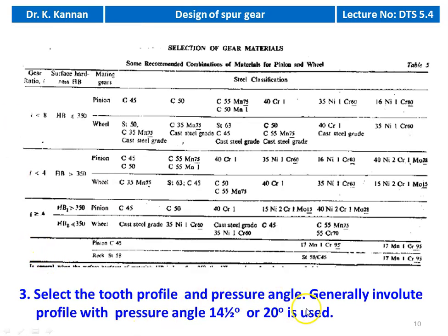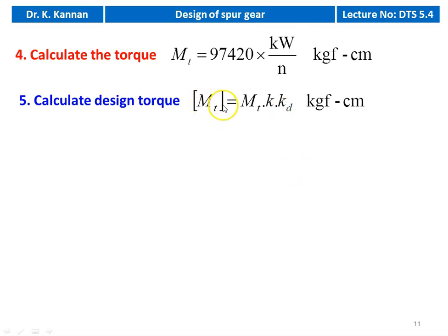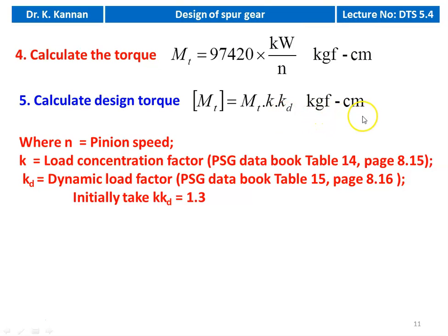Select the tooth profile and pressure angle. Generally, involute profile with pressure angle 14.5 degrees or 20 degrees is used; we always use involute profile. Then calculate the torque: MT = 97420 × Power(kW) / pinion speed, in kgf·cm. Calculate the design torque: [MT] = MT × K × KD in kgf·cm, where K is the load concentration factor and KD is the dynamic load factor. For initial calculation, take K·KD = 1.3.